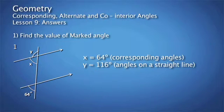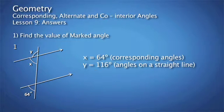Question 1. The value of X is 64 degrees because it corresponds with the angle that measures 64 degrees. The value of Y is 116 degrees because it's on a straight line with angle X, and the sum of the two angles gives us 180 degrees.